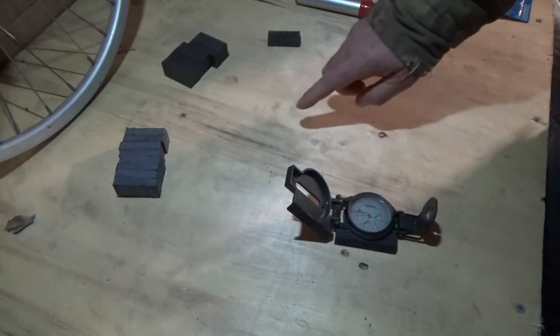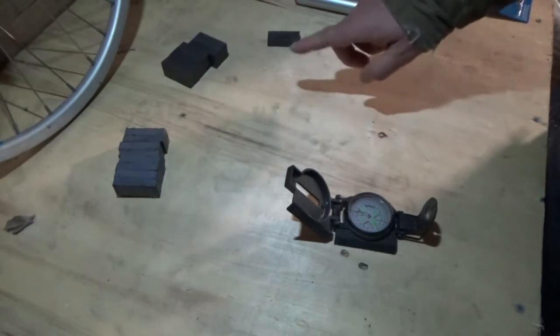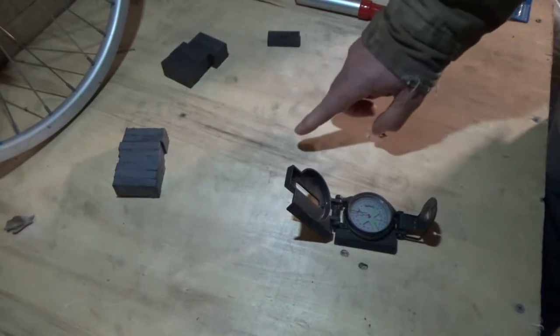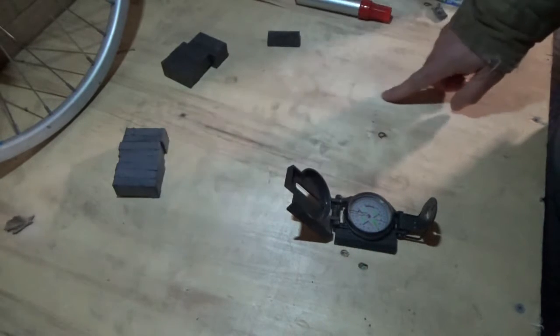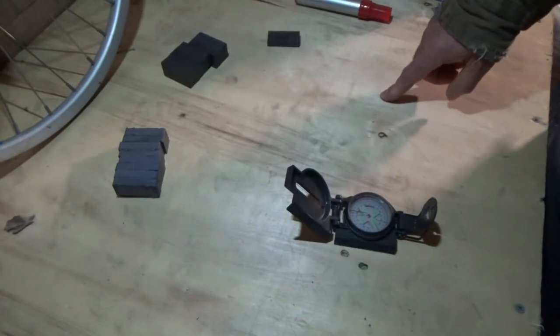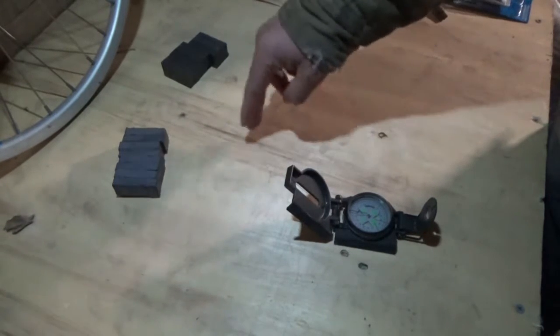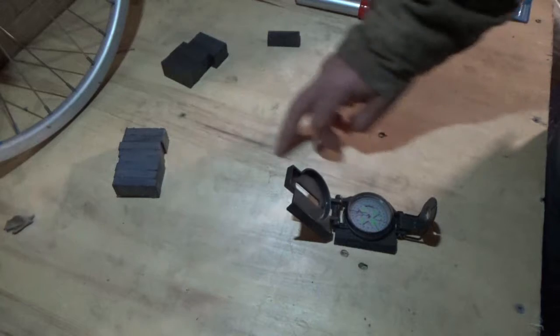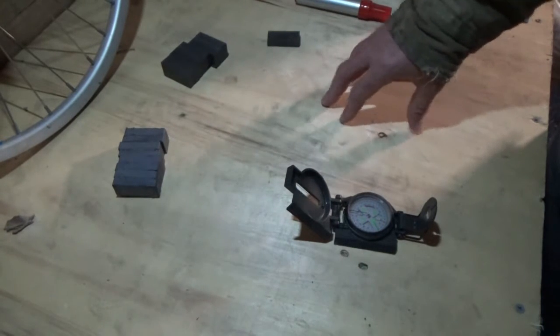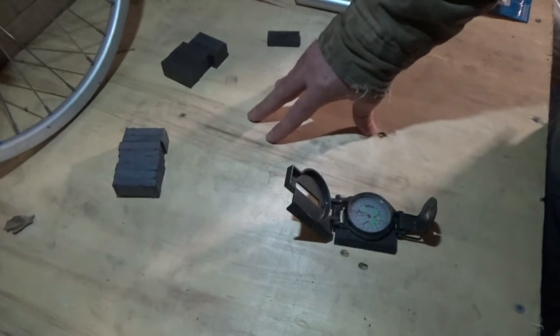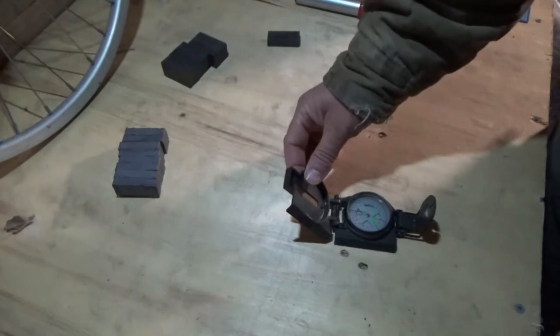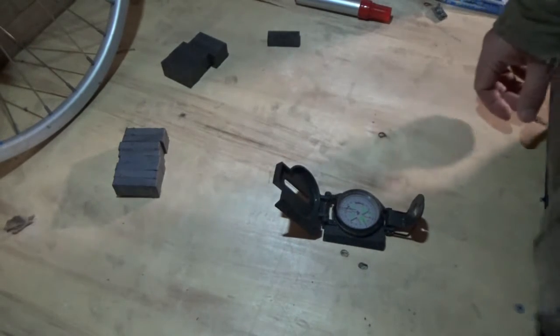All the north poles are pointing out on the wheel, so all the north sides of all the magnets are facing outwards along the circumference of the wheel. To identify the north pole of a magnet, the easiest way to do it is to use a compass.